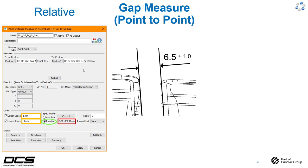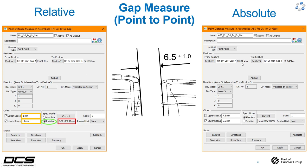Now we're going to take a look at how to set up the same measurement using absolute as your spec mode. The only difference between these two measurements is going to be our spec mode — we're going to select absolute instead of relative. Our nominal gap is still the same. Using relative you enter plus or minus one millimeter, and relative spec mode will auto-calculate and display your results relative to the nominal gap, in this case six and a half mils.